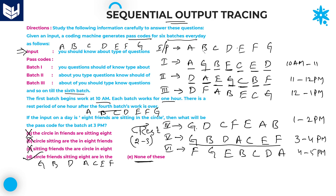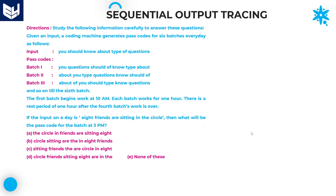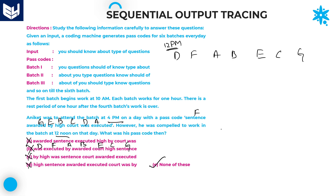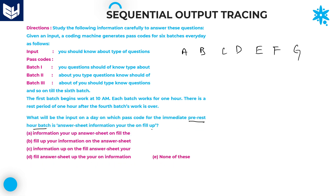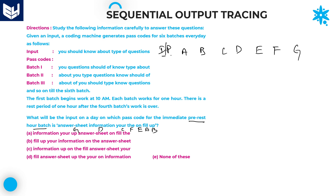Fourth batch code is g, d, c, f, e, a, b. This is the pre-rest batch code. The input is a, b, c, d, e, f, g. A equals 'fill', so the sentence must start with 'fill' - eliminate options A and C. Next word eliminates option D. Checking remaining option: a equals fill, b equals up, c equals your, d equals information, e equals on, f equals next letter, g equals write. Option B is the right answer.